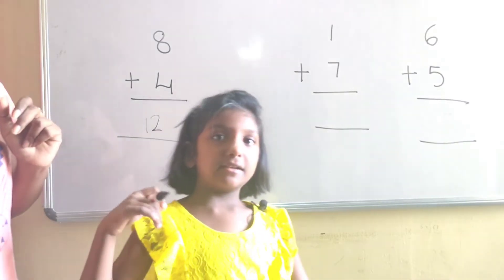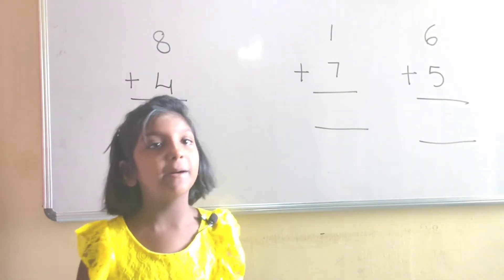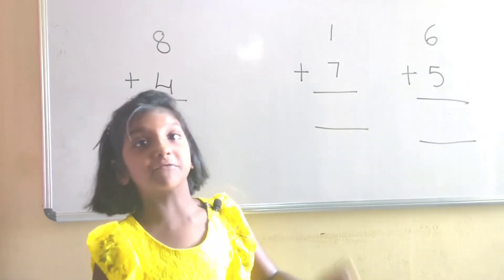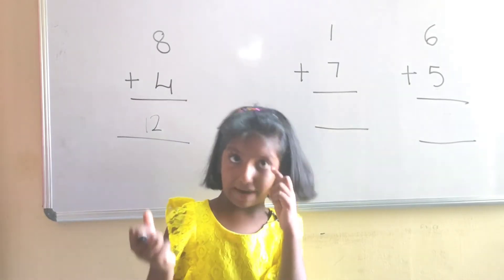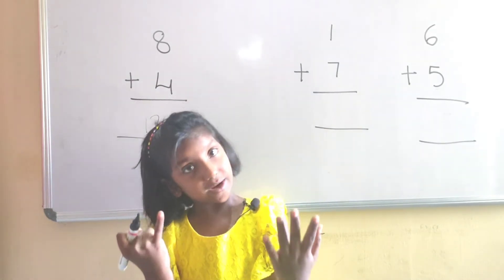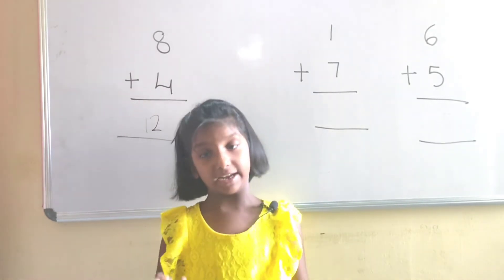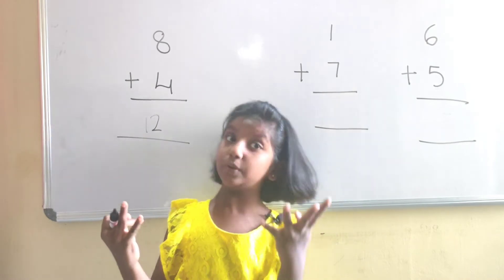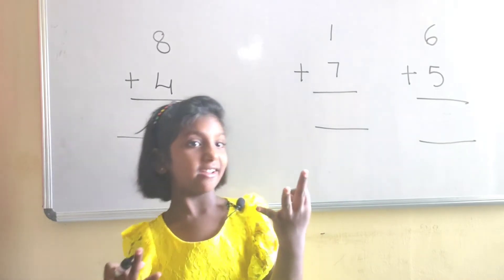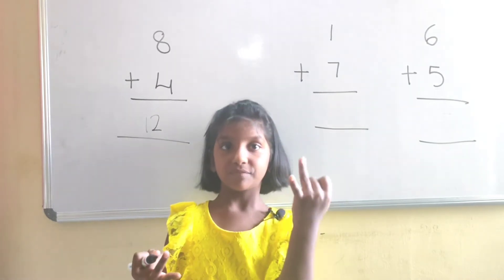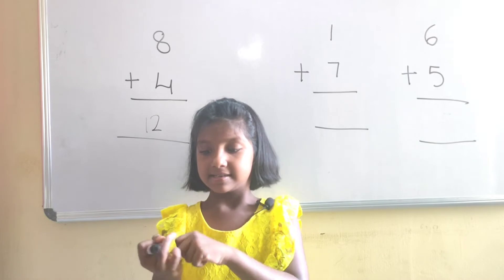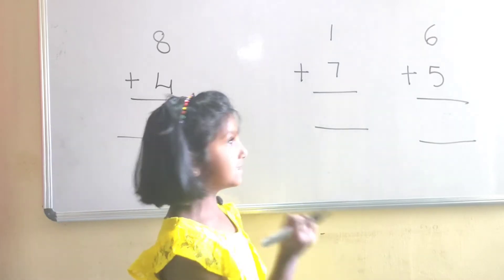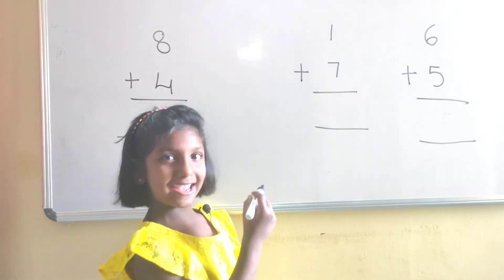Let us see the next problem. 1 and 7. 1 in mind, 7 in hand. 1, after 2, 3, 4, 5, 6, 7, 8. The answer is 8.